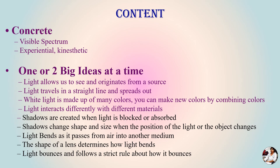The content of today's lecture covers: how light allows us to see and originates from a source, light travels in a straight line, white light is made up of different colors, how we are able to see only one color, and how shadows are created. We will also learn about how light travels, what a concave lens is, what a convex lens is, and different original sources of light.